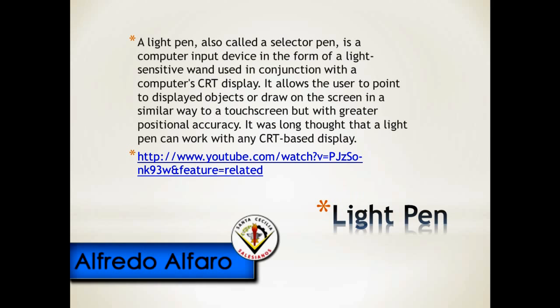A light pen, also called a selector pen, is a computer input device in the form of a light-sensitive wand. When used in conjunction with a computer CRT display, it allows the user to point to displayed objects or draw on the screen in a similar way to a touchscreen but with greater positional accuracy. It was long thought that a light pen can only work with a CRT-based display.